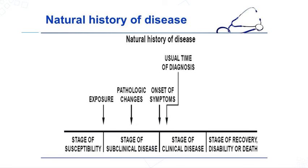We need first to know how the disease occurs in the host — what is the natural history of disease. The host first becomes in the stage of susceptibility, then exposure happens, after which the host enters a stage of subclinical disease, where some pathological changes occur inside the host. Once signs and symptoms start to appear, it enters the stage of clinical disease. This is the usual time for diagnosing the infection or disease.